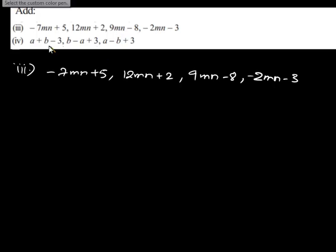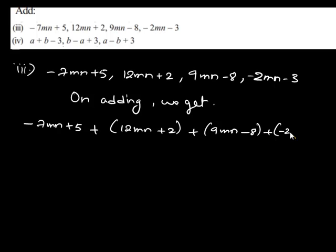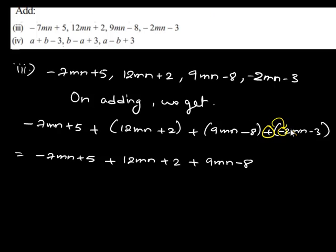So, let us do that. On adding we get: negative 7mn plus 5, plus 12mn plus 2, plus 9mn minus 8, plus negative 2mn minus 3. Now, let us rewrite this by removing the parentheses. We get negative 7mn plus 5 plus 12mn plus 2 plus 9mn minus 8, and here we have positive times negative is always negative.